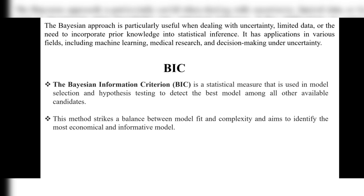Now, what is BIC? BIC stands for Bayesian Information Criterion. It is a statistical measure, similar to the Bayesian approach, used in model selection and hypothesis testing to detect the best model among all available candidates. This method strikes a balance between model fit and complexity, aiming to identify the most economical and informative model.